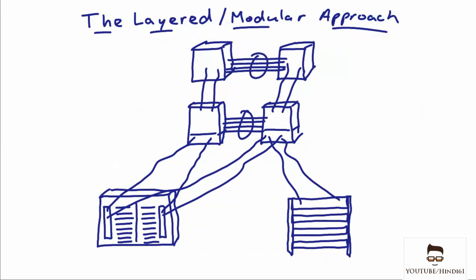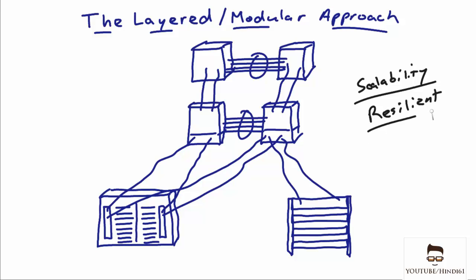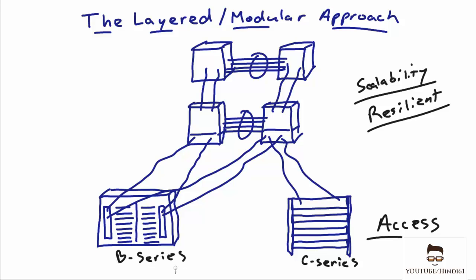When Cisco designs modern data center infrastructures, they still use a layered and modular approach. This helps scalability — it is very easy to scale out — and it is also very resilient, making it a reliable type of design. The layered approach includes the data center access layer, which might be C-Series rack-mounted servers or B-Series blade servers in a UCS chassis. We then have an aggregation layer, and finally a high-speed core layer.